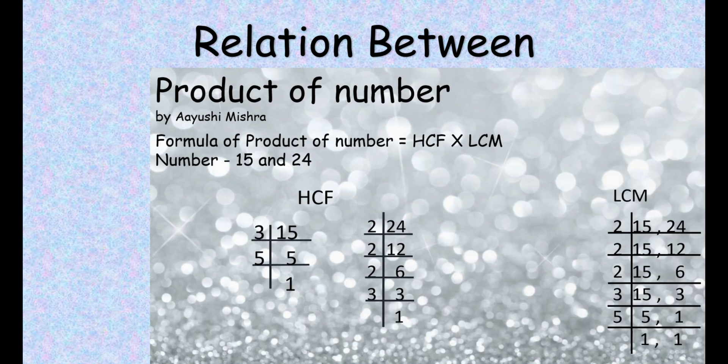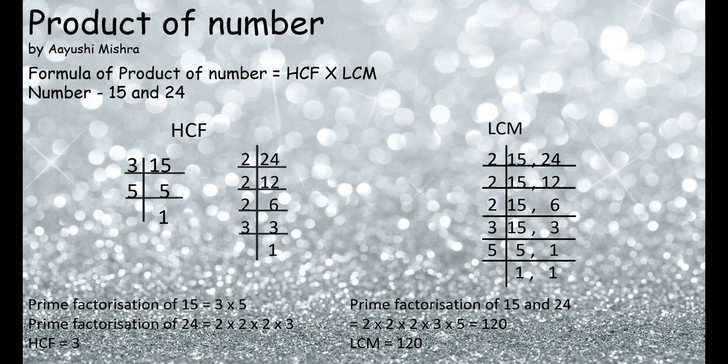Let's get started. Finding the product of numbers: the formula to find the product of numbers is that we have to multiply the HCF and LCM. Here the numbers are 15 and 24, and the HCF of 15 and 24 is 3.